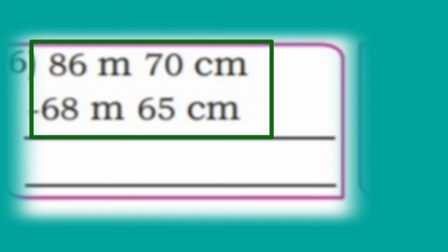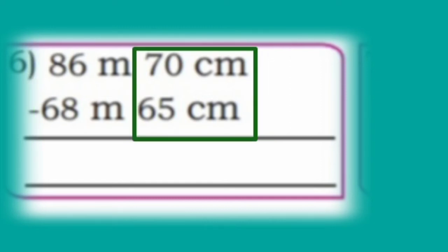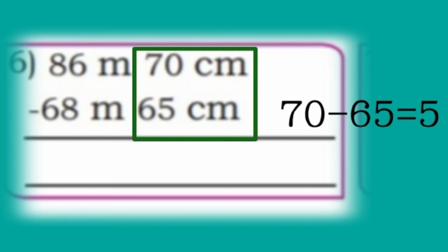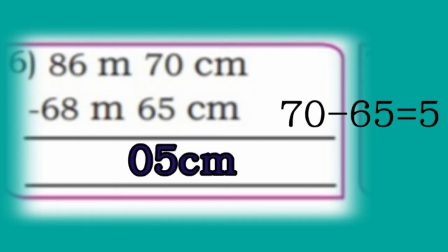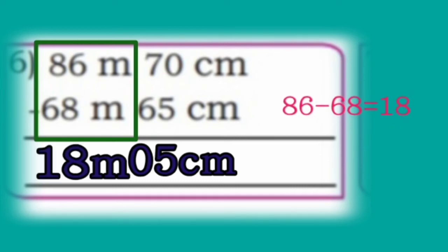Now sixth one: 86 meter 70 cm minus 68 meter 65 cm. First subtract centimeters: 70 minus 65 is 5 cm. Next subtract meters: 86 minus 68 is 18 meter. So the answer is 18 meter 5 cm.